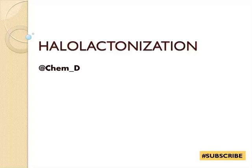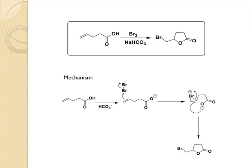So let's see what is halolactonization reaction. In the halolactonization reaction, the gamma delta unsaturated carboxylic acid is treated with bromine and sodium bicarbonate to give a five-membered cyclic ester, that is lactone, along with bromine substituent.